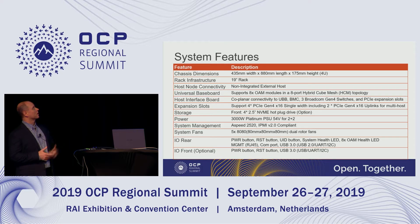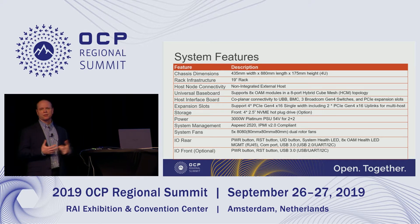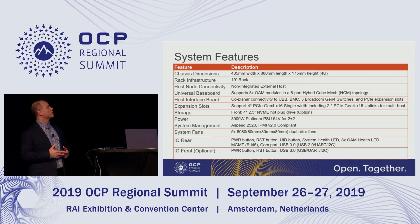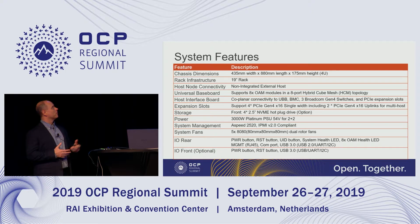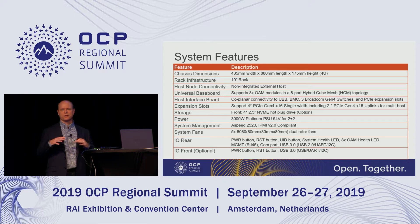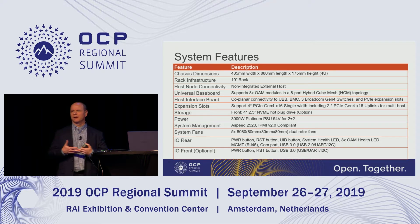These are some of the system features. This is a 4U server that fits in a 19-inch rack. It does not have the host integrated, so you need an external host to drive this. It supports eight OAM modules in an eight-port HyperCube mesh configuration. The connectivity between the UBB and the host interface board is a coplanar connection — both are on the same plane, plugging in with a series of Examax high-density connectors.